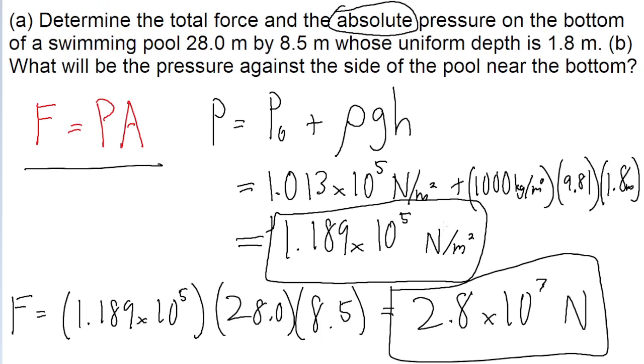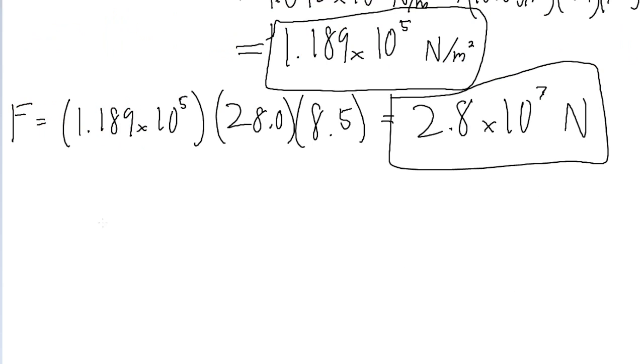Now part B of the problem asks what will the pressure be against the side of the pool near the bottom. So it's not asking about the pressure on a specific surface or over a specific area, but just against the side of the pool at the lowest depth. It might seem like we're not given enough information to work with, but really this is a good example of a problem that tests your conceptual knowledge of fluids and pressure in general.